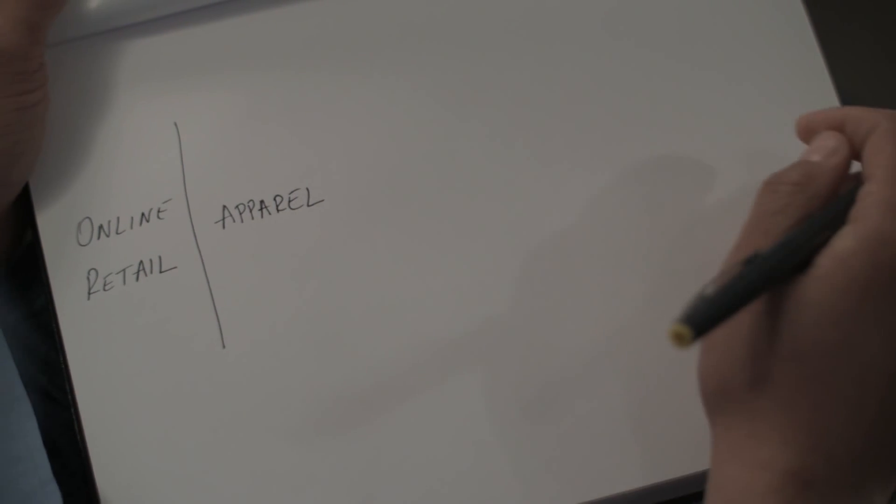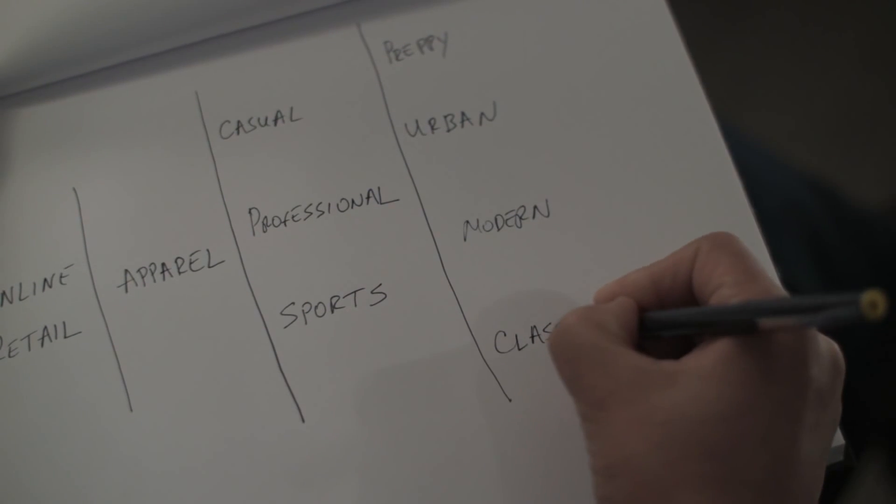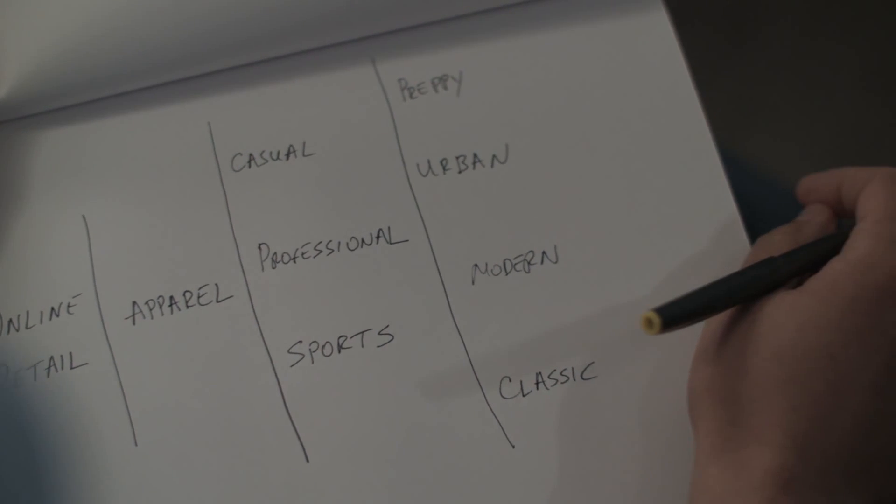Let's review where we are. In the online retail industry, we are looking at the apparel market because we are looking to sell clothing. The apparel market could be subdivided into multiple market segments, the notable ones of which are casual clothing, professional clothing, and sports clothing. Each of those market segments could be divided into more specific sub-segments based on style — such as urban, modern, preppy, classic — and even more specific sub-segments based on the price factor of the clothing, from inexpensive to very expensive.